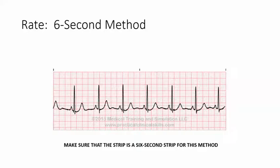All right, we're going to talk about the different ways that you can determine the heart rate. There are several different methods. The first one that's the easiest is the six-second method.